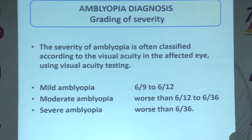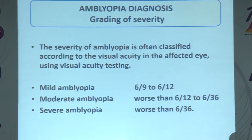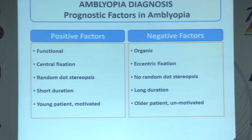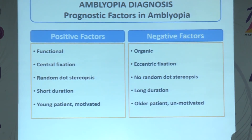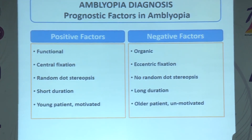Once amblyopia is diagnosed based on visual acuity and absence of other causes, we must grade it for prognosis and management. Mild amblyopia is 6/9 to 6/12, moderate amblyopia is worse than 6/12 to 6/36, and severe amblyopia is worse than 6/36. We should also note positive and negative prognostic factors. Positive factors include functional amblyopia, central fixation, positive random dot stereopsis, short duration of amblyopia, young patient age, and especially motivated parents.